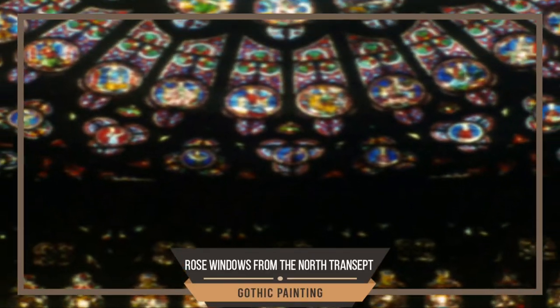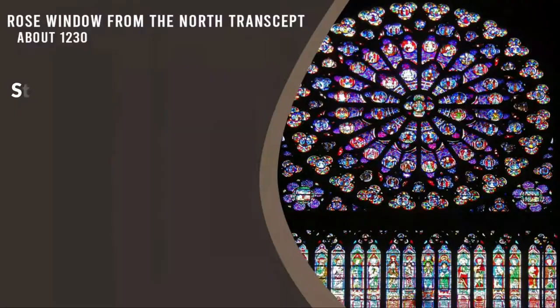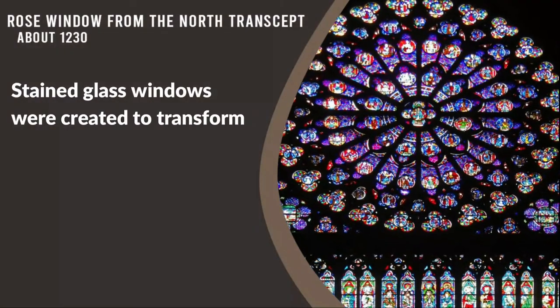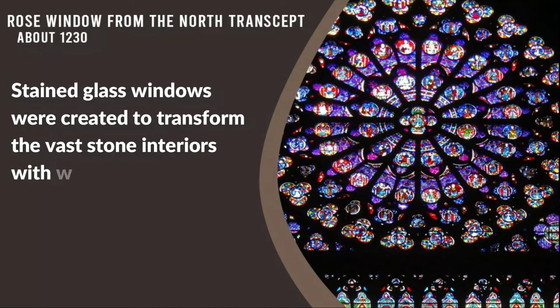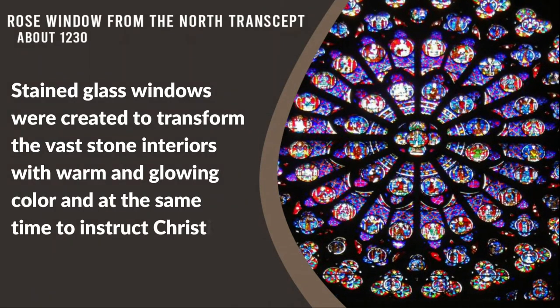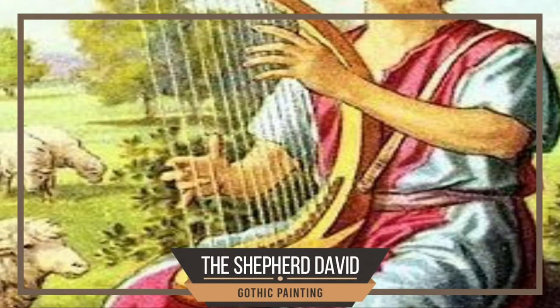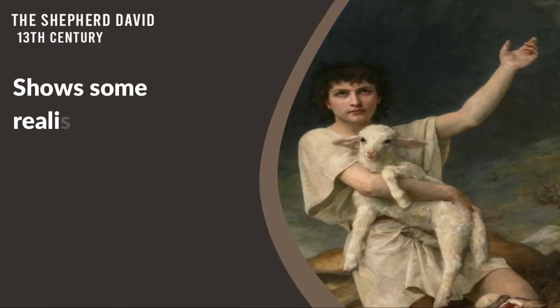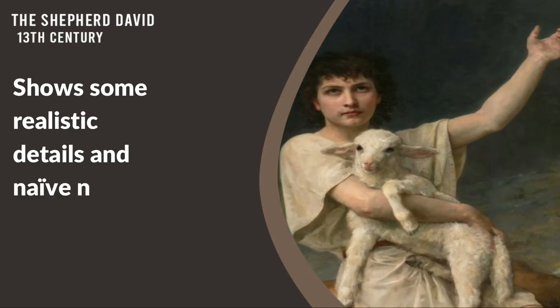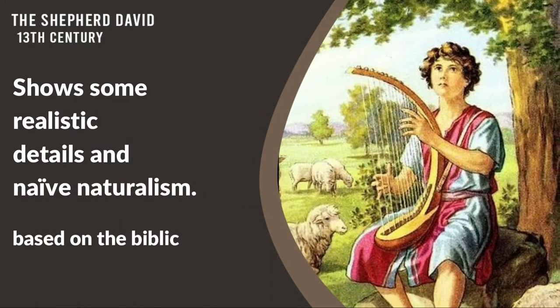Rose windows from the north transept, about 1230. Stained glass windows were created to transform the vast stone interiors with warm and glowing color, and at the same time to instruct Christians. The Shepherd David — a 13th century Gothic manuscript illustration — shows some realistic details and native naturalism, and is based on the biblical story.